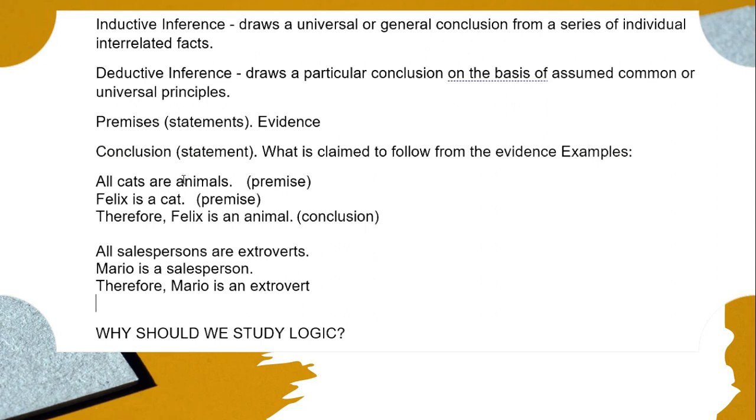So from these particular experiences, from these particular circumstances, we draw the conclusion that all cats are animals. So that if all cats are animals and Felix is a cat, therefore Felix is an animal. So these two statements are the basis of our conclusion Felix is an animal. So we infer from these two statements.